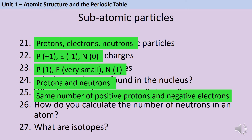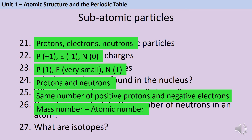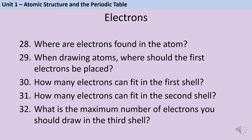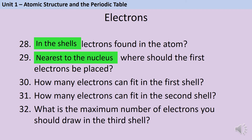You can calculate the number of neutrons in an atom by subtracting the atomic number from the mass number. Isotopes are different versions of the same element that have the same number of protons but different numbers of neutrons. Electrons are found in atom shells, and when drawing atoms you start by placing electrons nearest to the nucleus. The first shell can only fit two electrons, the second shell can fit eight, and in the third shell you can put up to eight electrons before you need to start drawing the fourth shell.